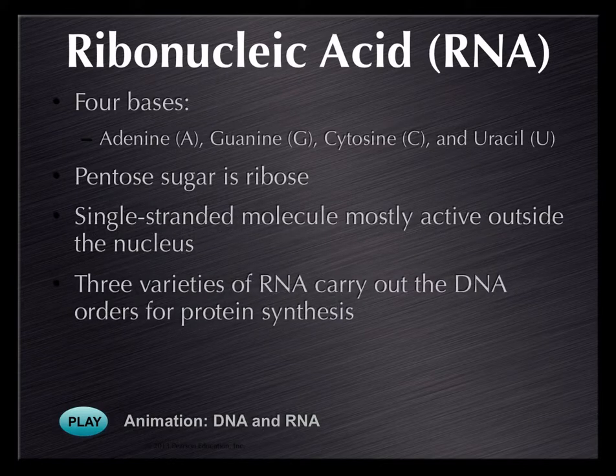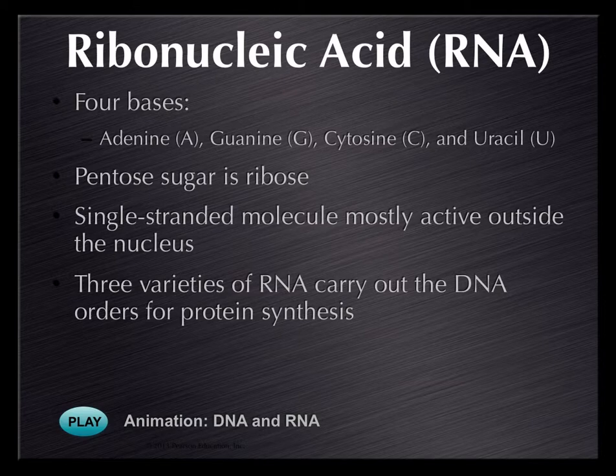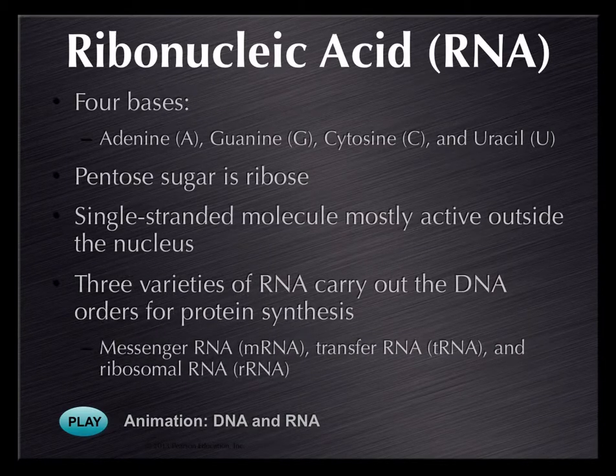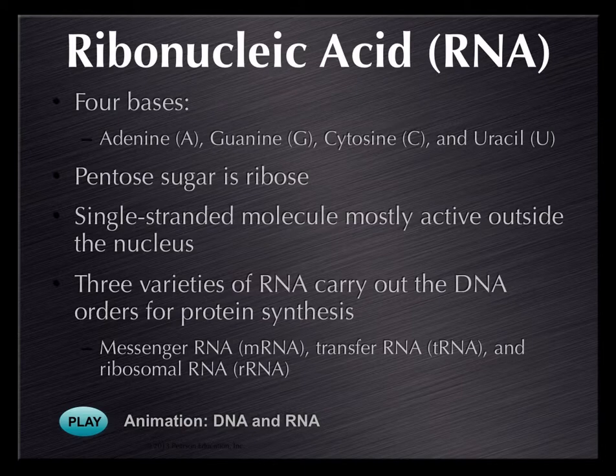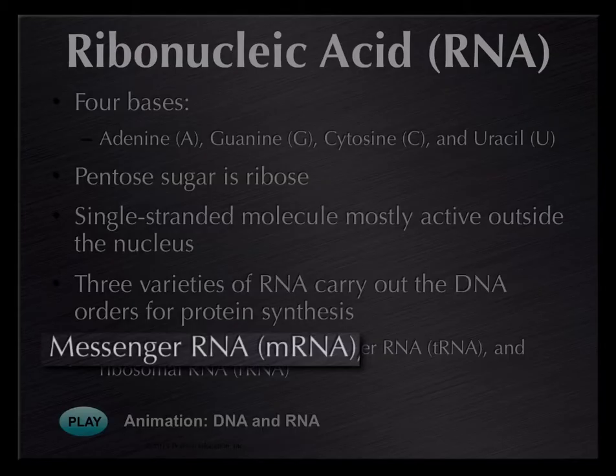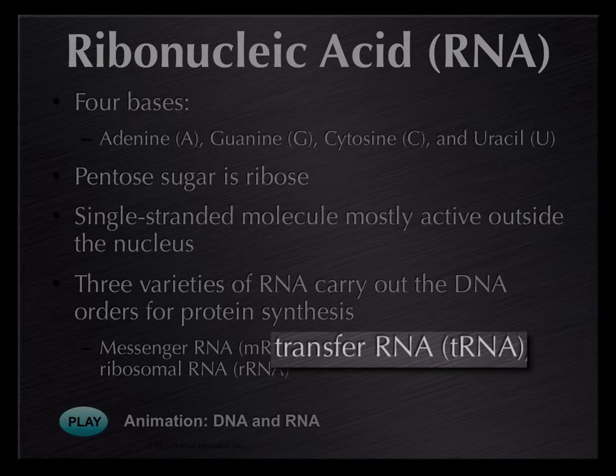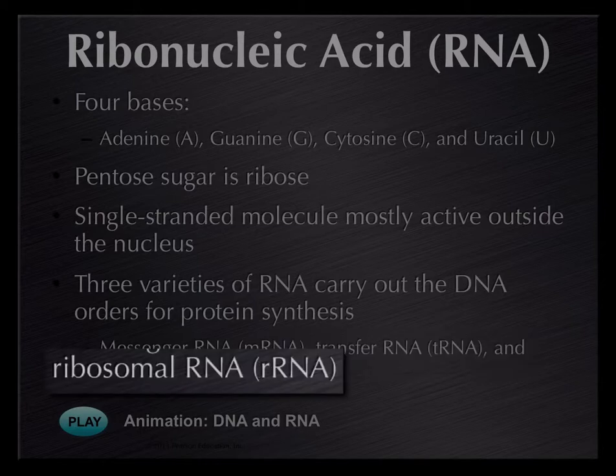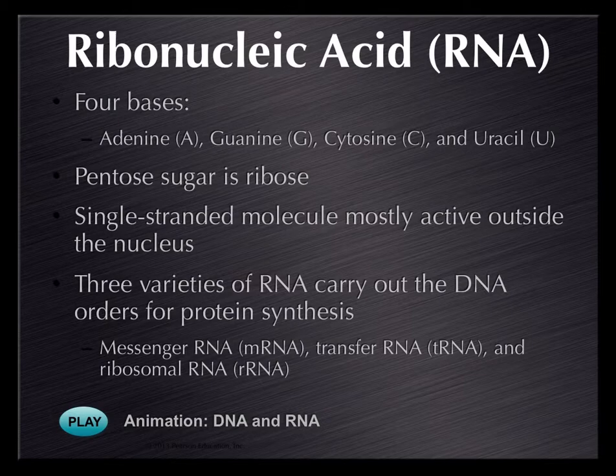There are three varieties of RNA. Actually, there's a few more, but we'll talk about three varieties of RNA, and each of them helps DNA make protein. Those three varieties of RNA would be messenger RNA, transfer RNA, and ribosomal RNA. And notice that they're abbreviated with a little letter in the front of RNA that tells which type we have. In other words, messenger RNA would be mRNA, transfer RNA would be little tRNA, and ribosomal RNA would be little rRNA. We'll talk about those in more detail in a chapter still to come.